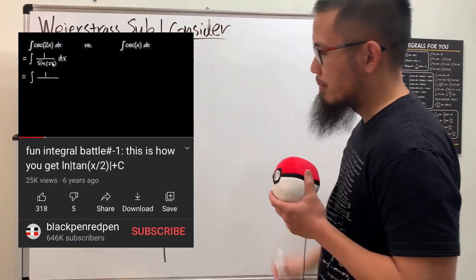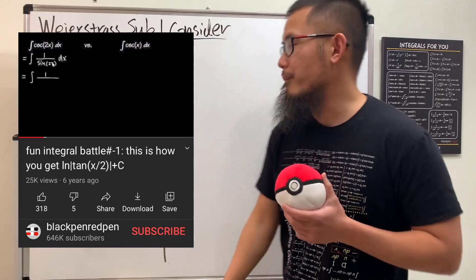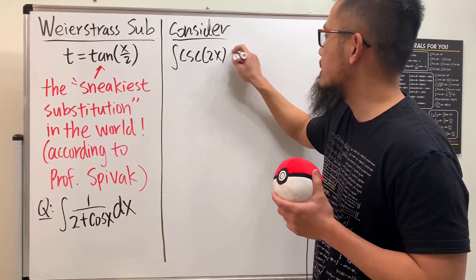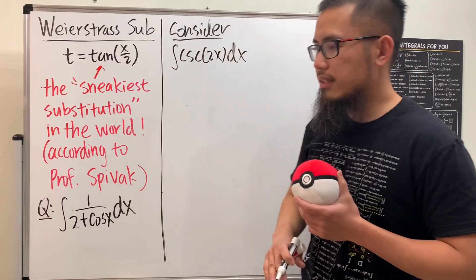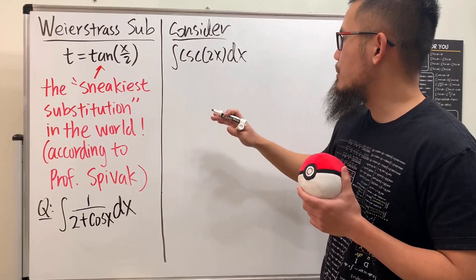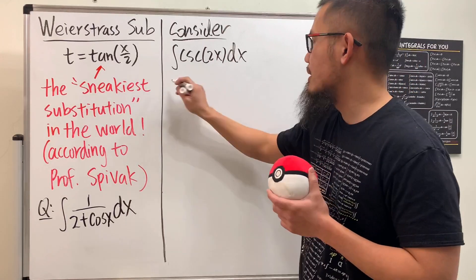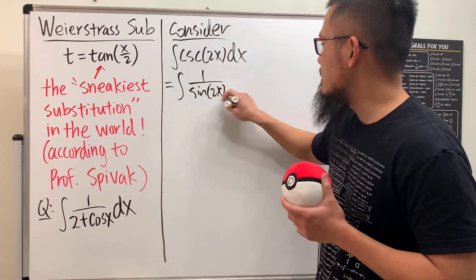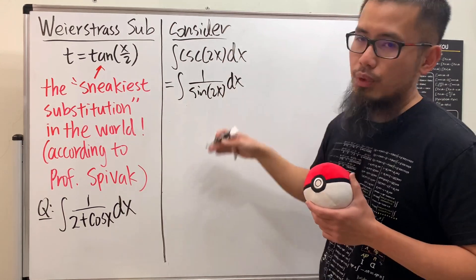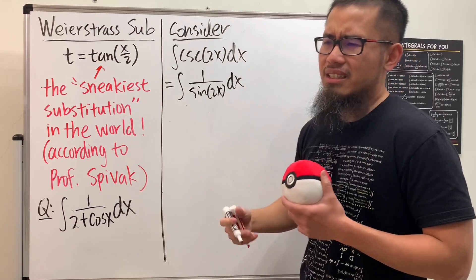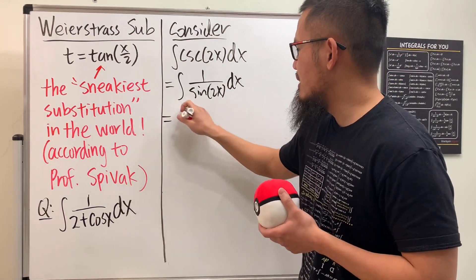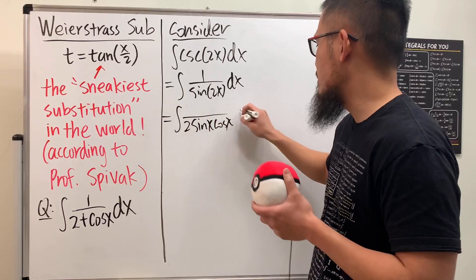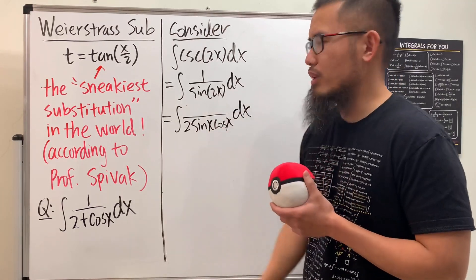This comes from my integral battle from many years ago. Let's consider the integral of cosecant of 2x. Let's look at this as 1 over sine of 2x. The reason for the 2x is that once we have sine of 2x it's more natural to use the double angle identity.